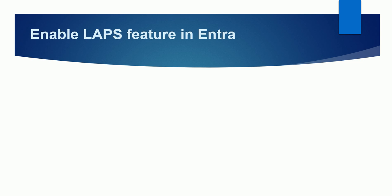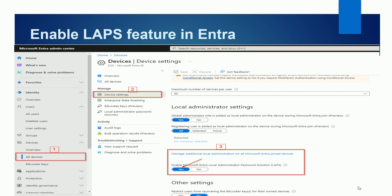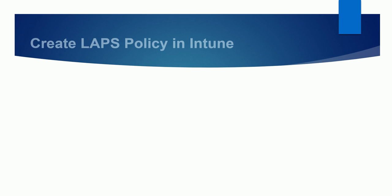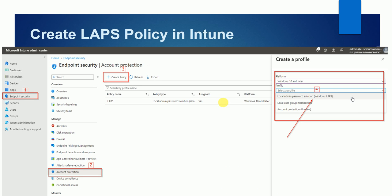To enable the LAPS feature in Entra, go to all devices and then to the all device settings, where you need to enable LAPS for your policy. To create the LAPS policy, go to Endpoint Security inside Intune, then go to Account Protection.